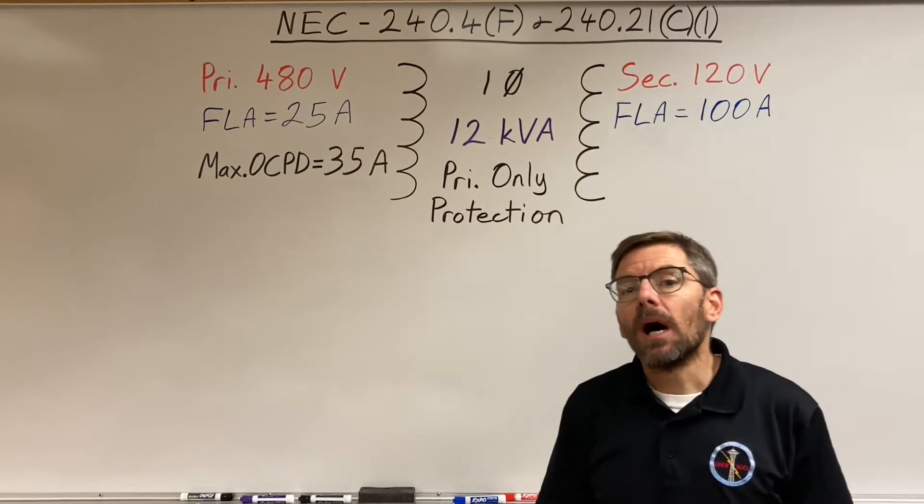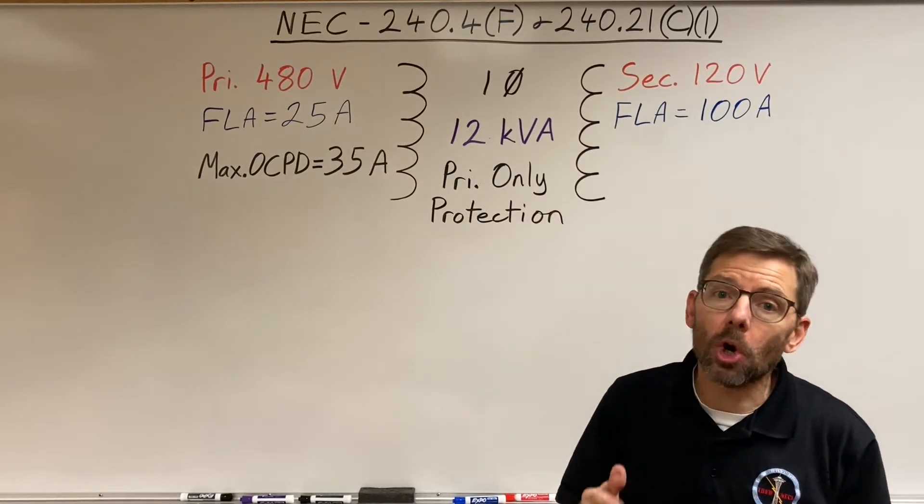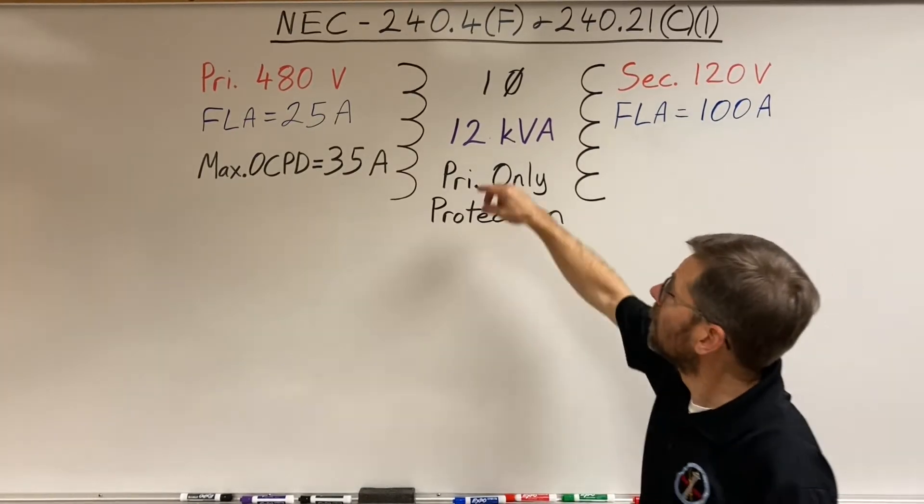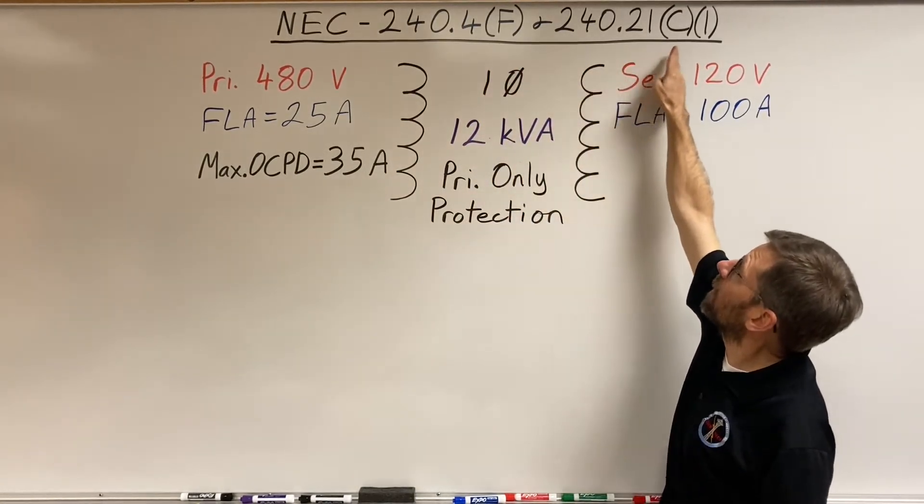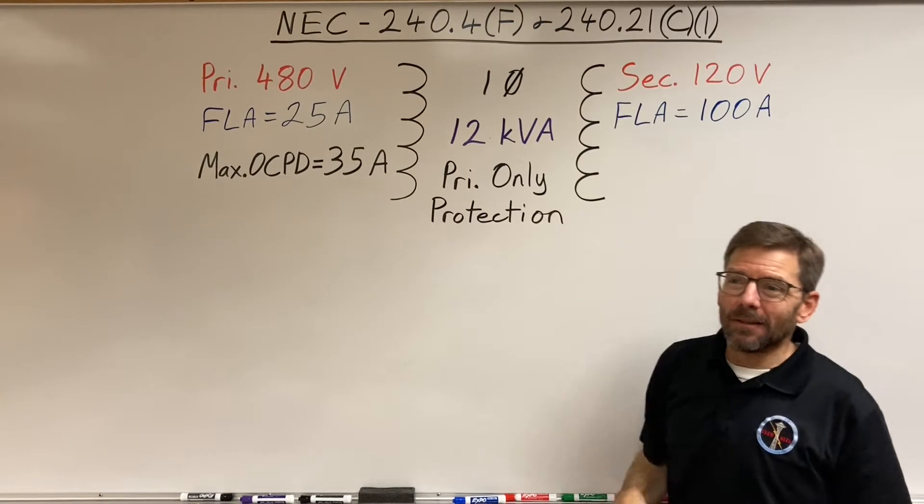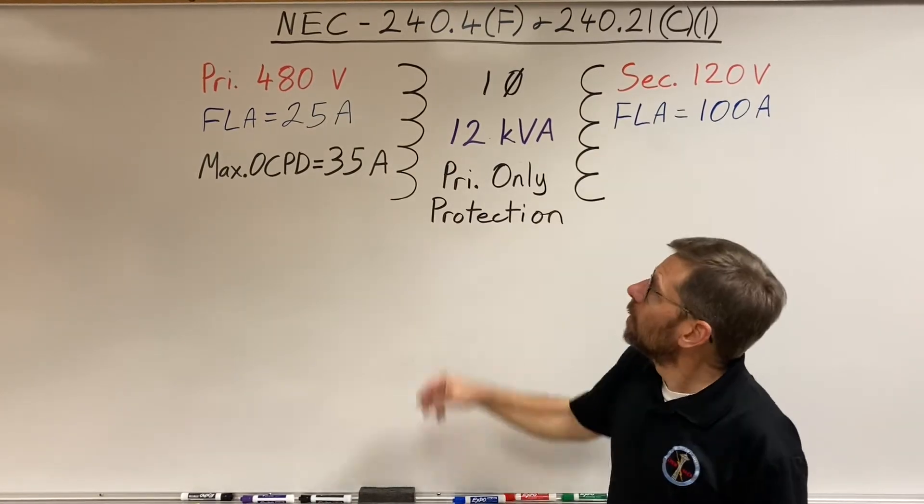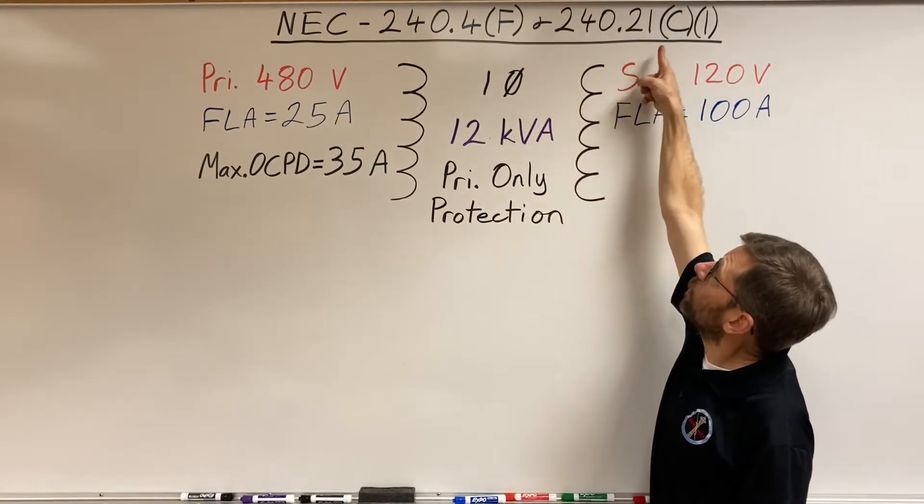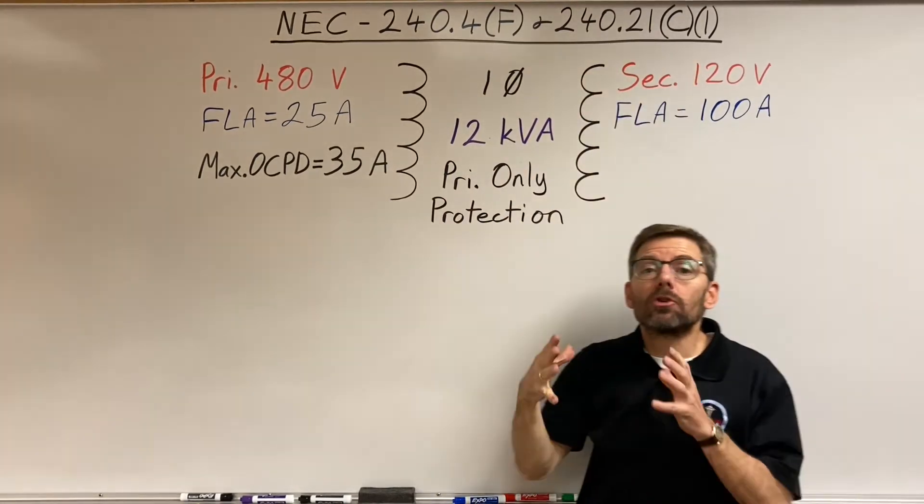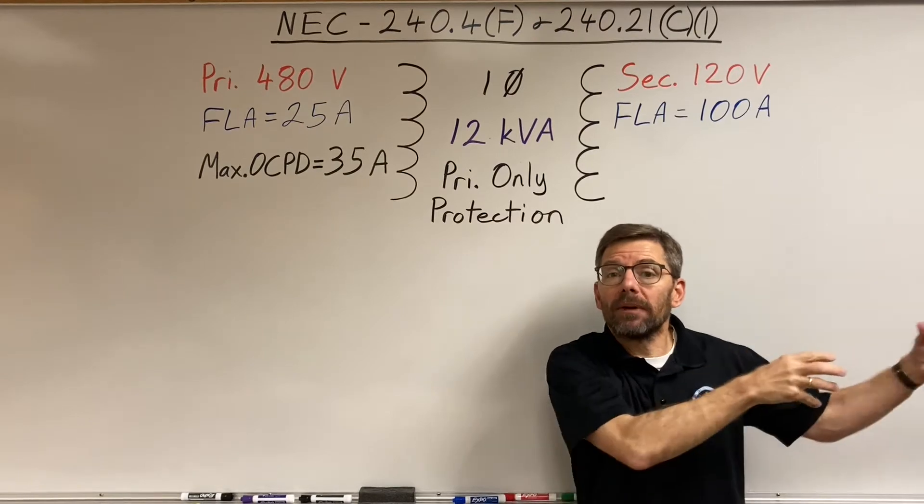In this video, I'm going to focus in on two code subsections, 240.4F and 240.21C1. They pretty much say the same thing. 240.4 is about conductors, 240.21C is about transformer secondary conductors.